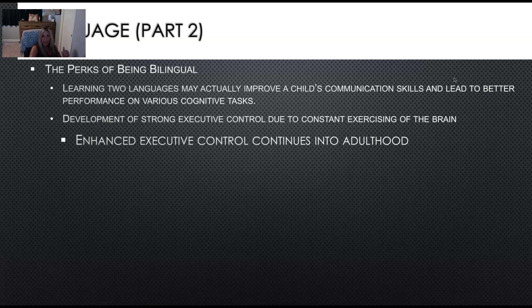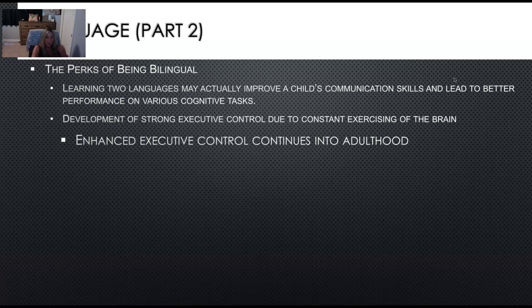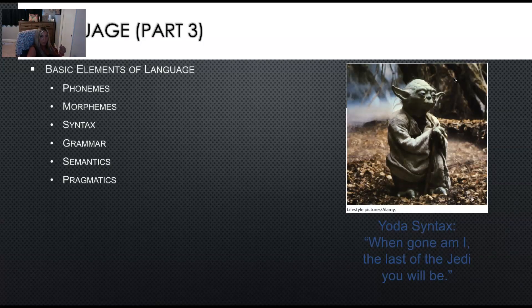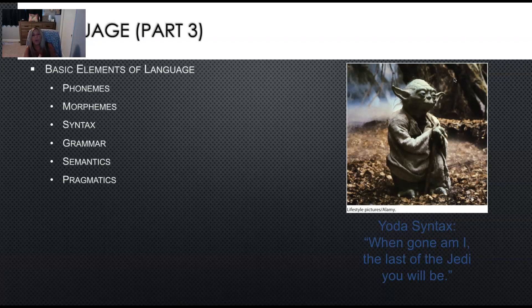Perks of being bilingual: learning two languages is really important, and they say you should learn at least two. It may actually improve a child's communication skills, leading to better performance in cognitive tasks and development of strong executive control due to constant exercising of the brain. Anytime you're learning a new skill, a new language, a new anything, your brain is making those connections — it's really good for exercising the brain and lowering chances of Alzheimer's disease. The basic elements of language include phonemes, morphemes, syntax, grammar, semantics, and pragmatics.